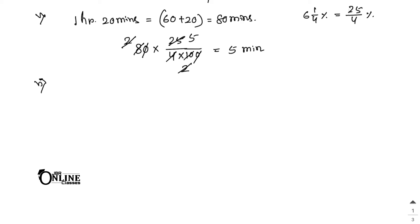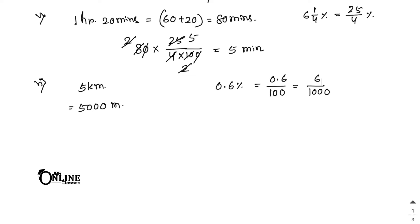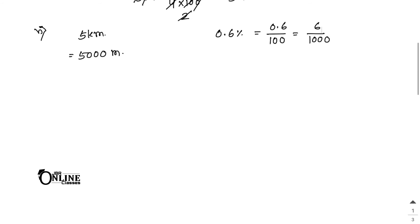Number 6: 0.6% of 5 kilometers. 0.6% means 0.6/100, which equals 6/1000 because 0.6 = 6/10. 5 kilometers equals 5000 meters. So 5000 × 6/1000 = 5 × 6 = 30. The answer is 30 meters.